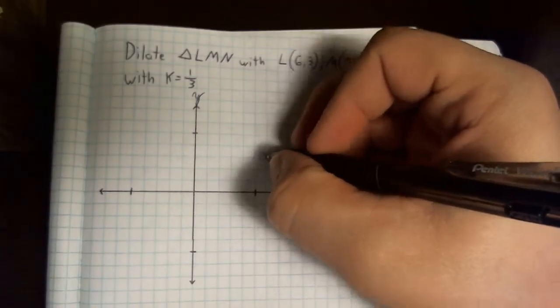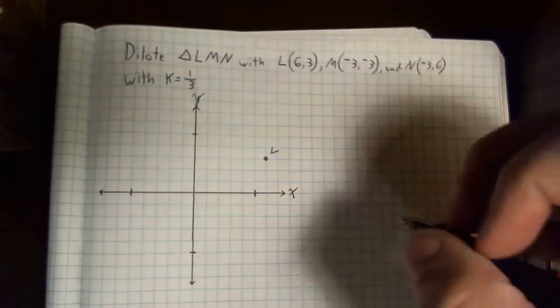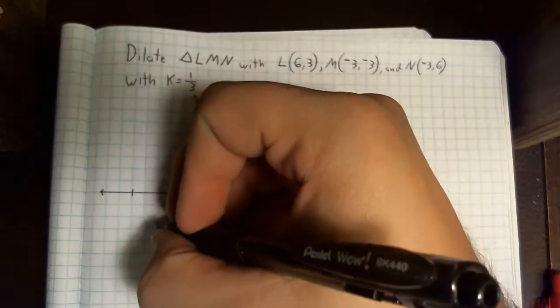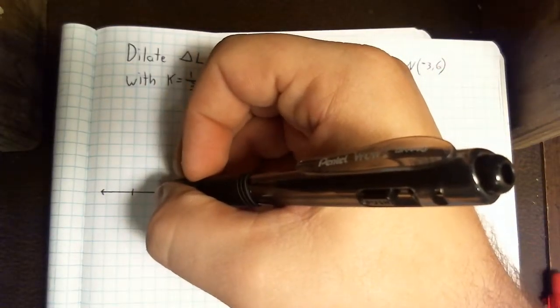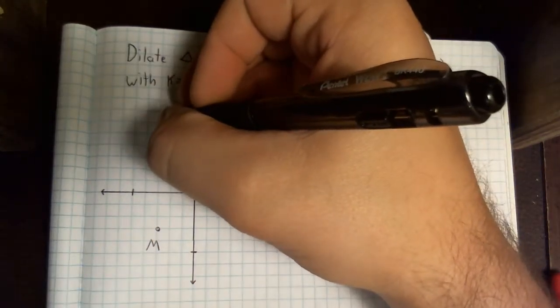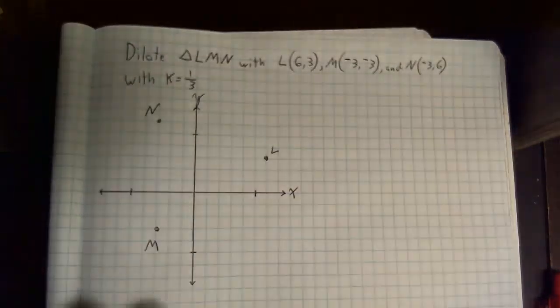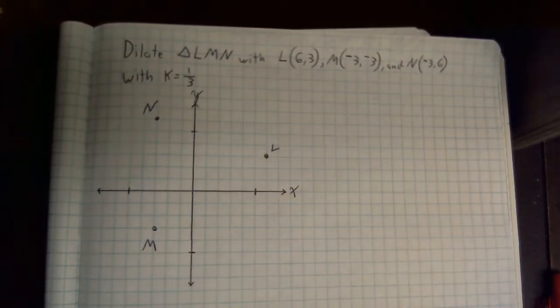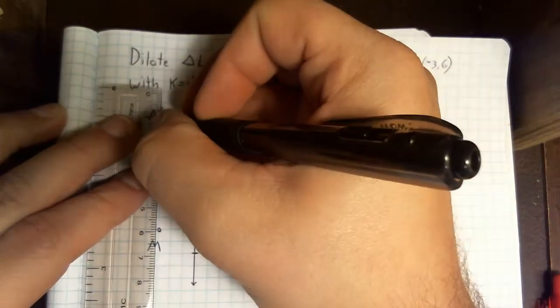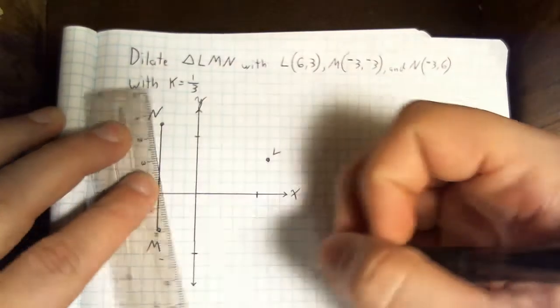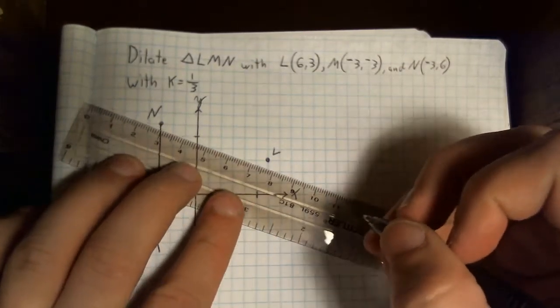First I'm going to plot out my triangle. L is at 6, 3. M is at negative 3, negative 3. And N is at negative 3, 6. That is a huge triangle. What we're hoping to do with this though is to make it smaller.